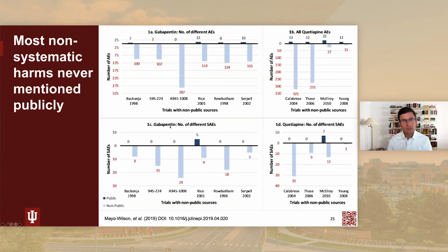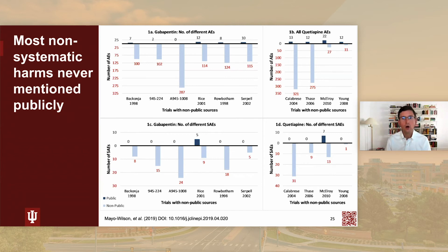We know that most non-systematic harms are never mentioned publicly. These tables show the proportion of harms reported publicly versus non-publicly for trials of gabapentin and quetiapine from the MUDS study. We found that in some cases there were hundreds of harms reported in non-public sources but only a couple — or in some cases no harms — reported in public sources. Very concerning was that this was true for both all harms and serious harms: events that might lead to hospitalization or require medical attention were also being underreported in public sources.